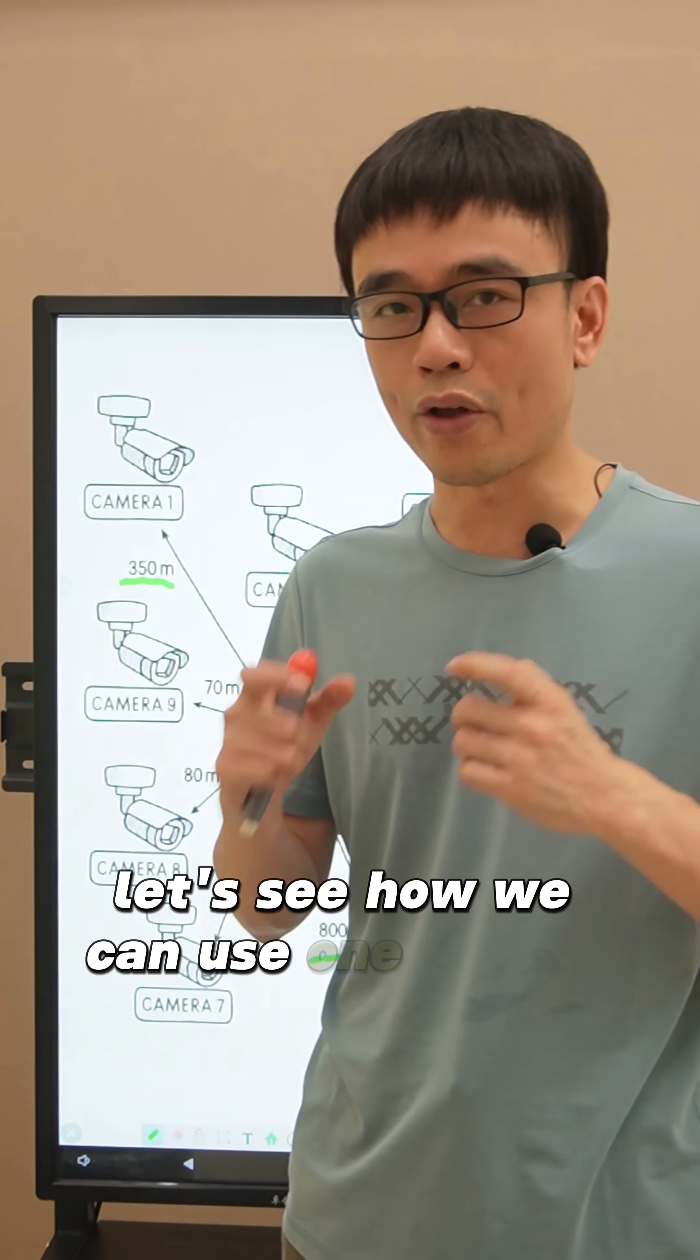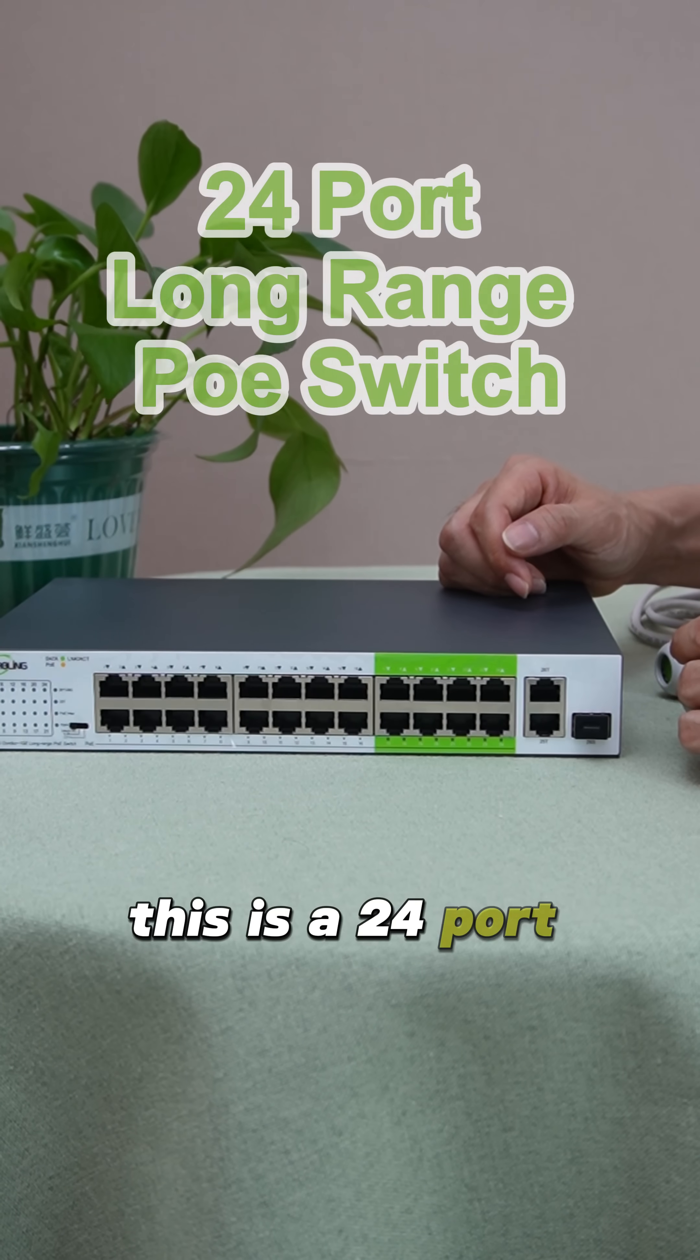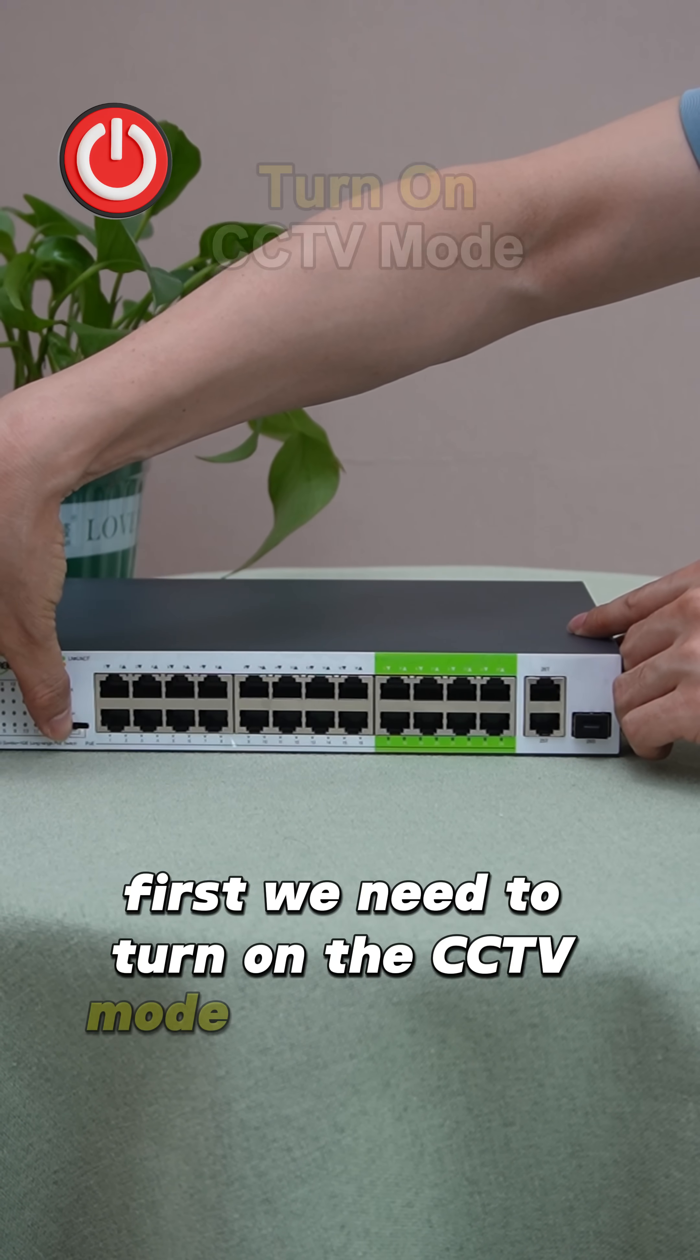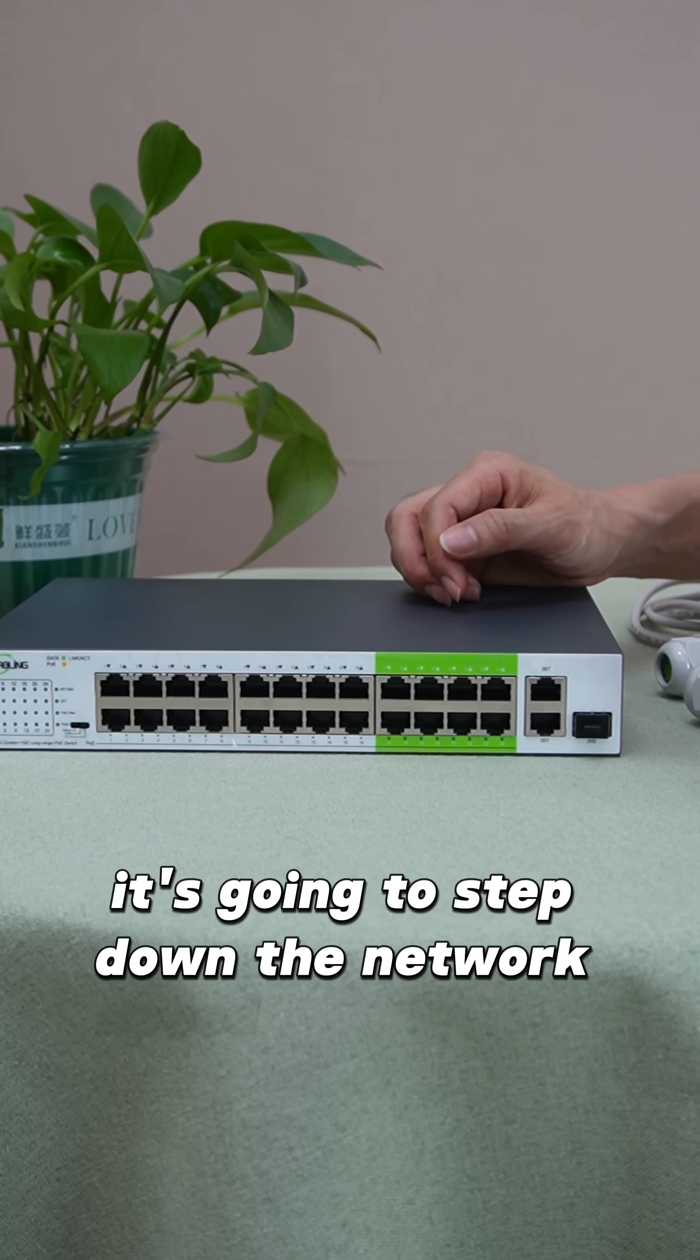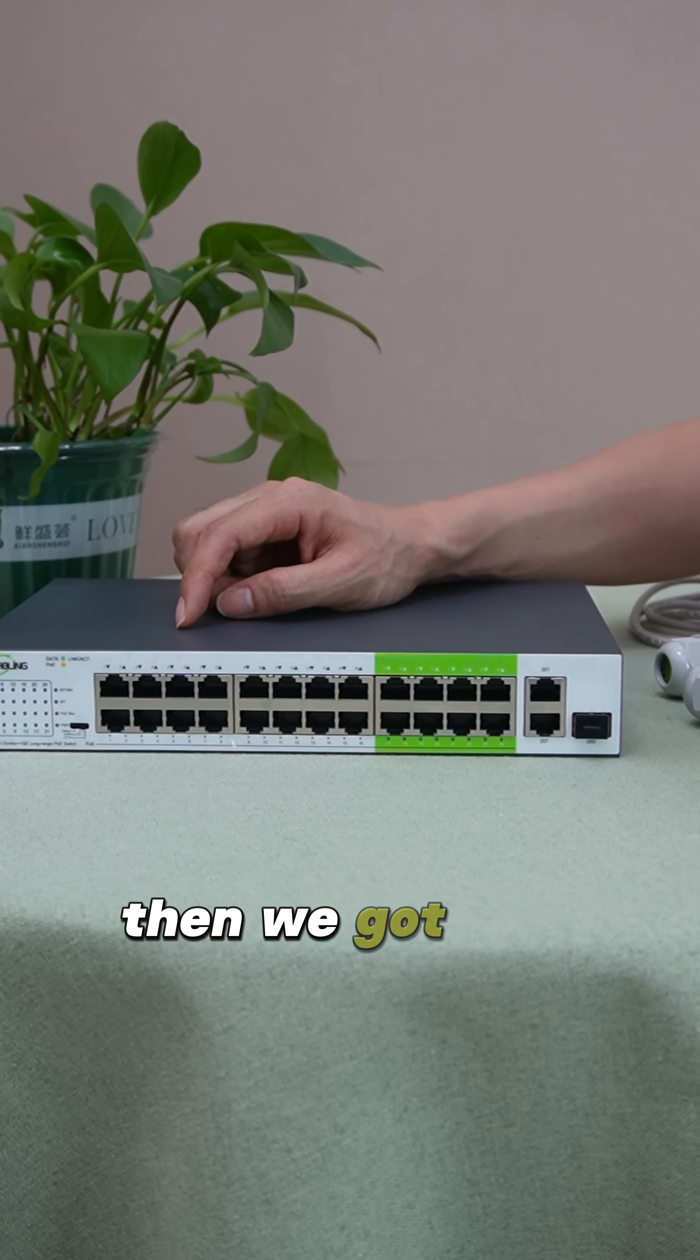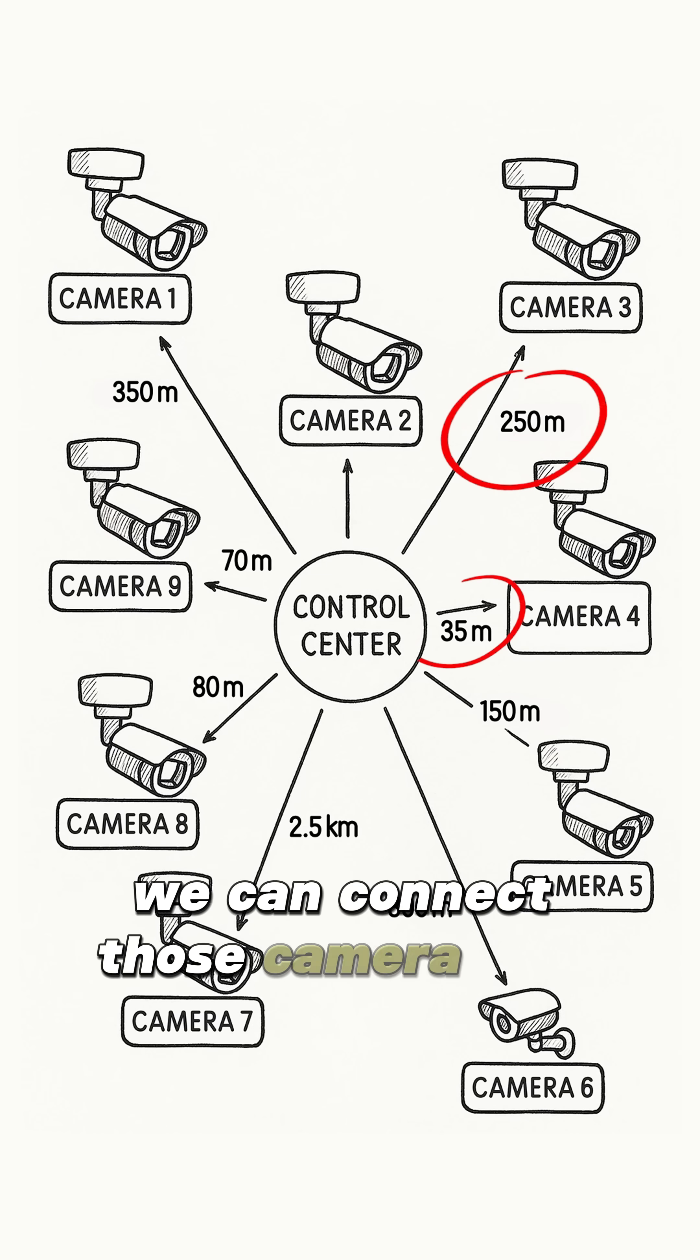Alright, let's see how we can use one switch to connect all those cameras. This is a 24-port long-range PoE switch. First, we need to turn on the CCTV mode and apply the setting. It's going to step down the network speed of the first 8 ports to 10 megabits per second. Then we got 250 meters long-range PoE. We can connect those cameras less than 250 meters to these 8 ports.